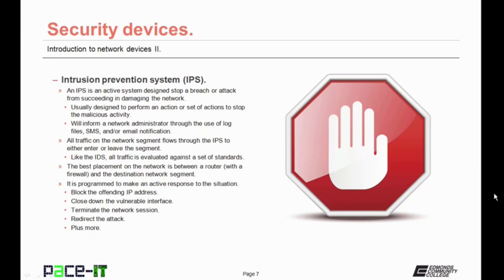The best placement on the network segment is between a router — with a firewall, hopefully — and the destination network segment, so all the traffic flows through the IPS. IPSs are programmed to make an active response to the situation. They can block the offending IP address, close down vulnerable interfaces, terminate network sessions, and redirect the attack, among other actions. The main thing is that they are designed to be active — to stop the breach or attack from succeeding in damaging your network.